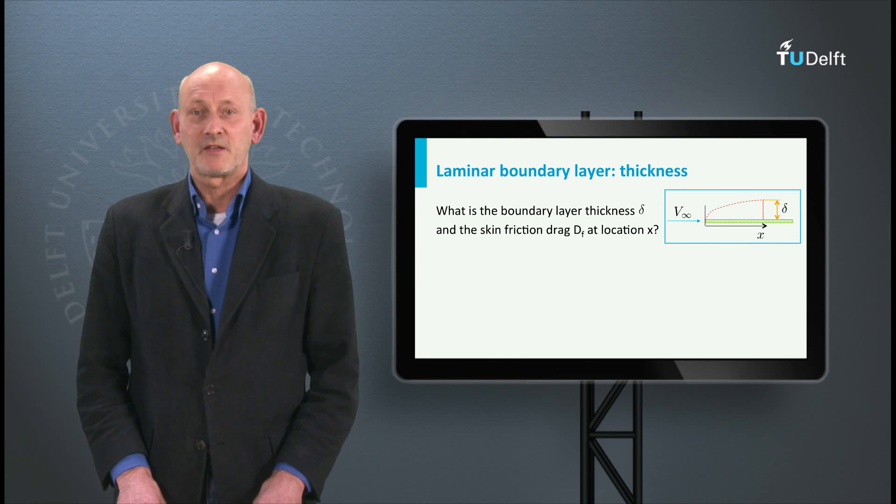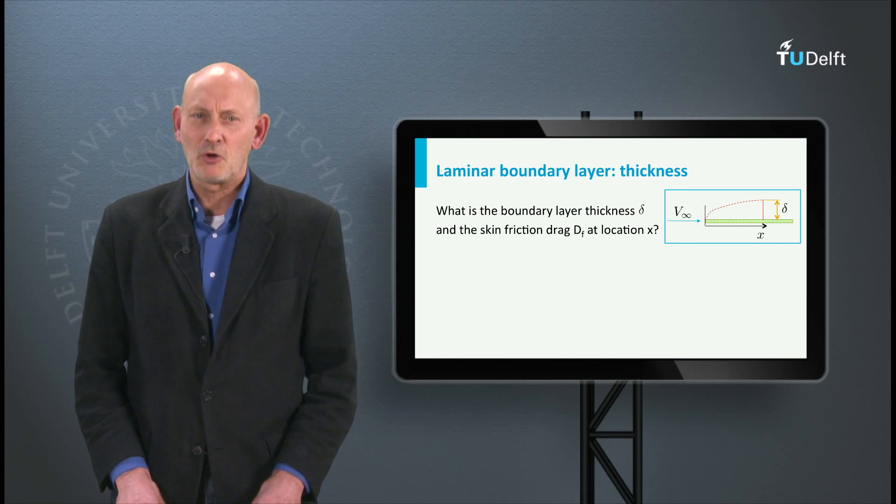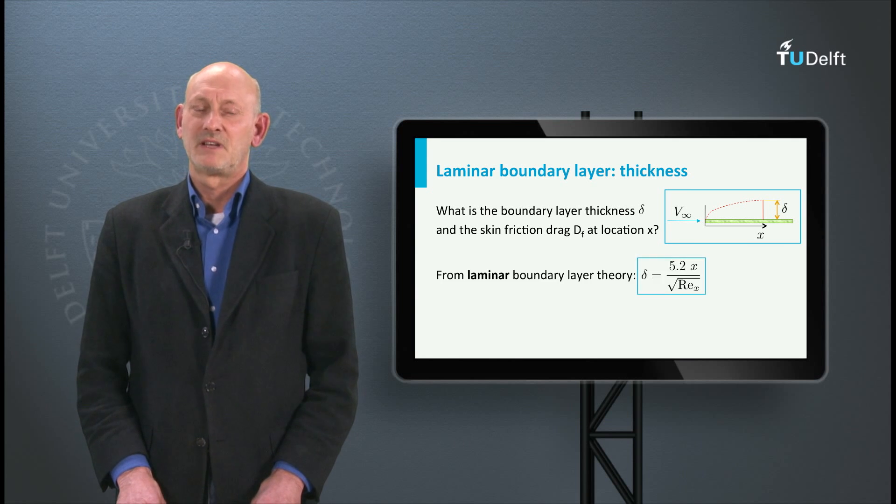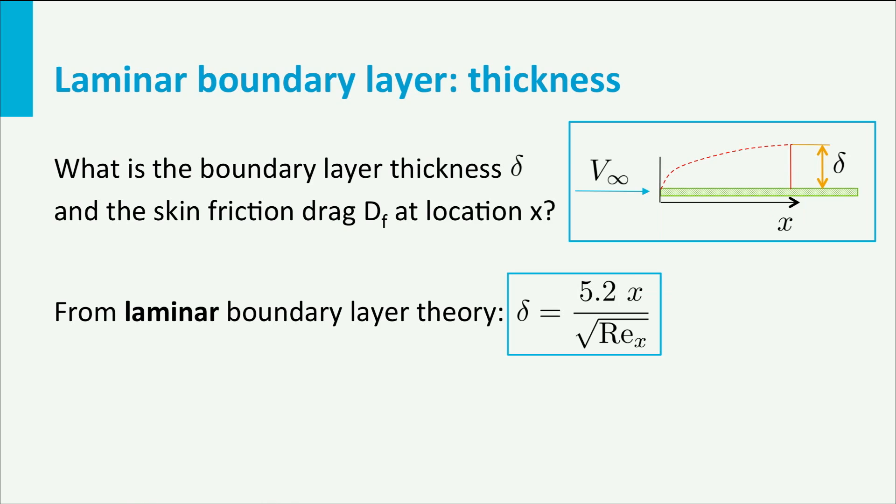With his boundary layer theory, Prandtl, together with his former student Blasius, was able to simplify the Navier-Stokes equations in such a way that they could get analytical results for a laminar boundary layer. From this theory we find that the local boundary layer thickness at a station x from the leading edge is equal to 5.2 times x divided by the square root of the local Reynolds number.